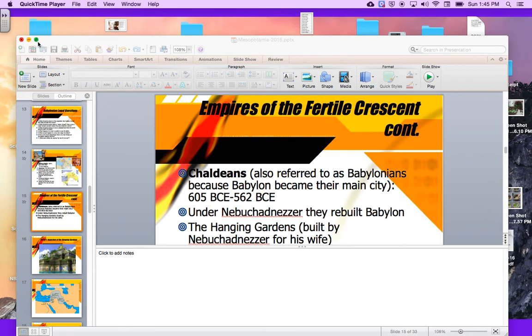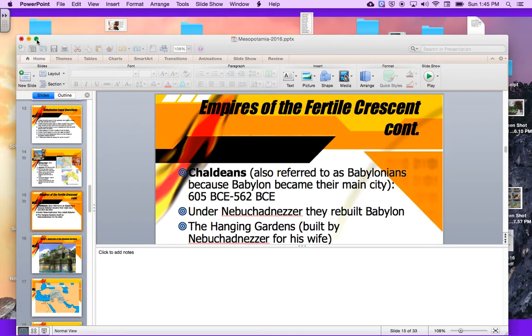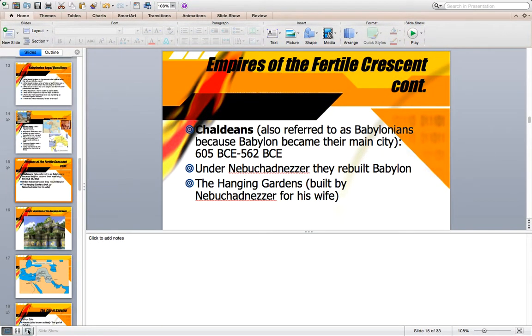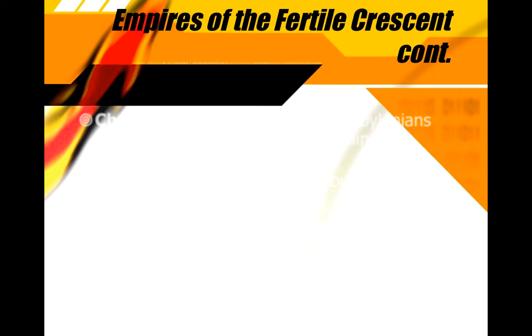Hello, everyone. We're going to do a screencast lecture for the last section of this unit over Mesopotamia and Egypt. We have several different civilizations that we need to look at, including today the Chaldeans, the Phoenicians, and then a little bit deeper emphasis on the Persians and the Hebrew civilizations. This is going to be a little bit longer screencast, but you can watch them in individual chunks. This would also be a good review for your unit test.